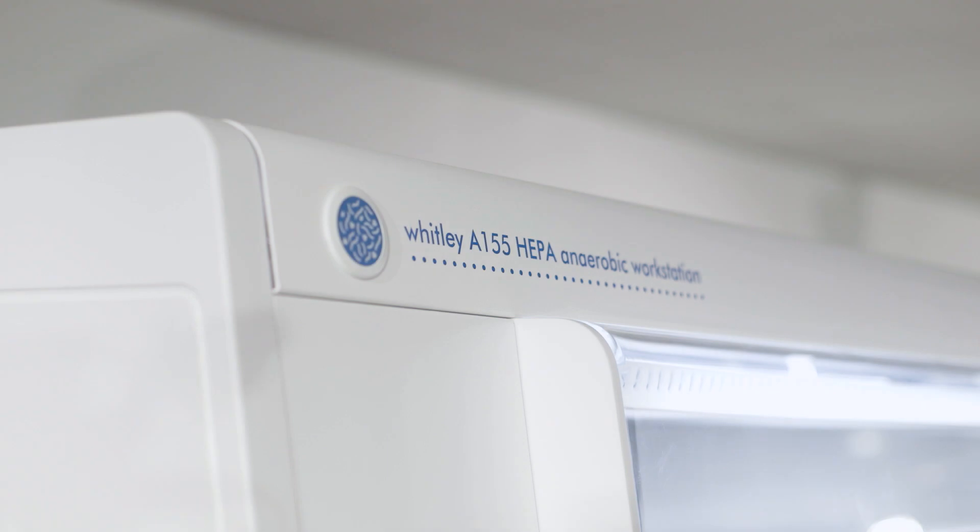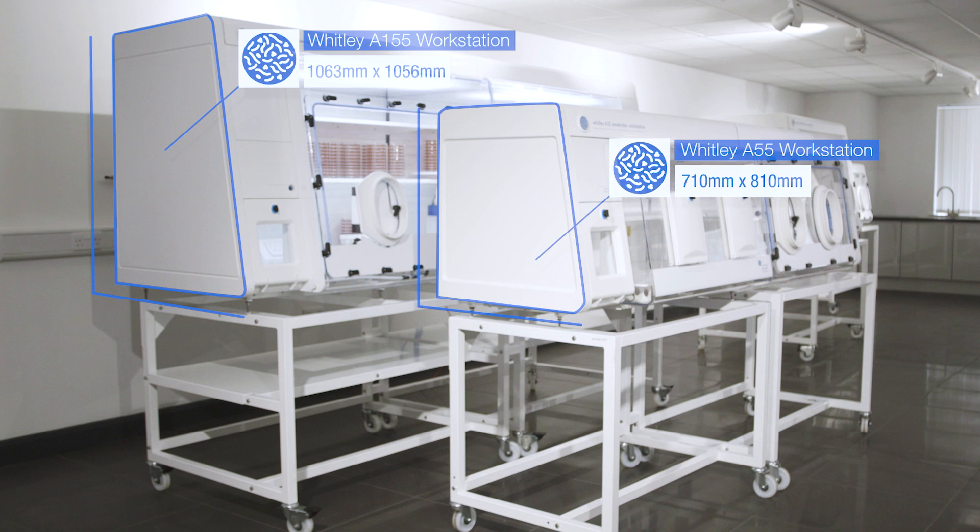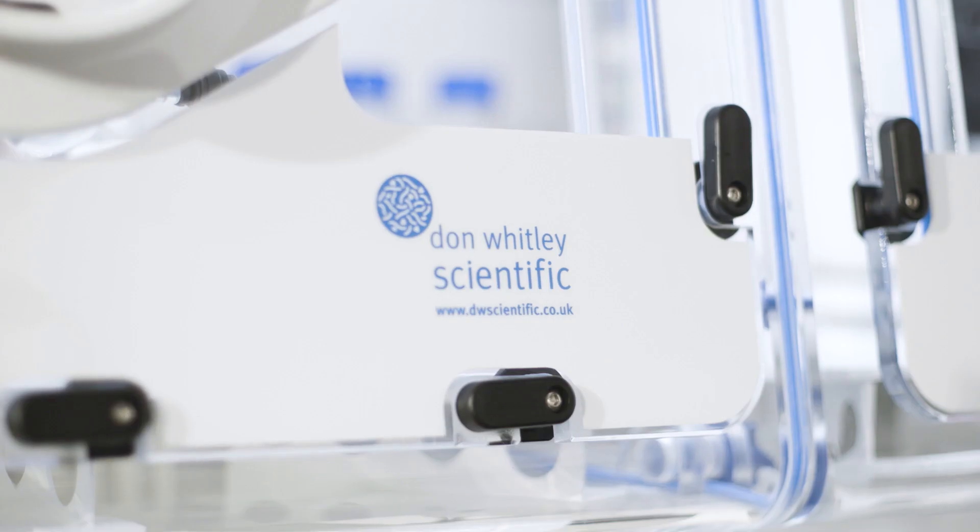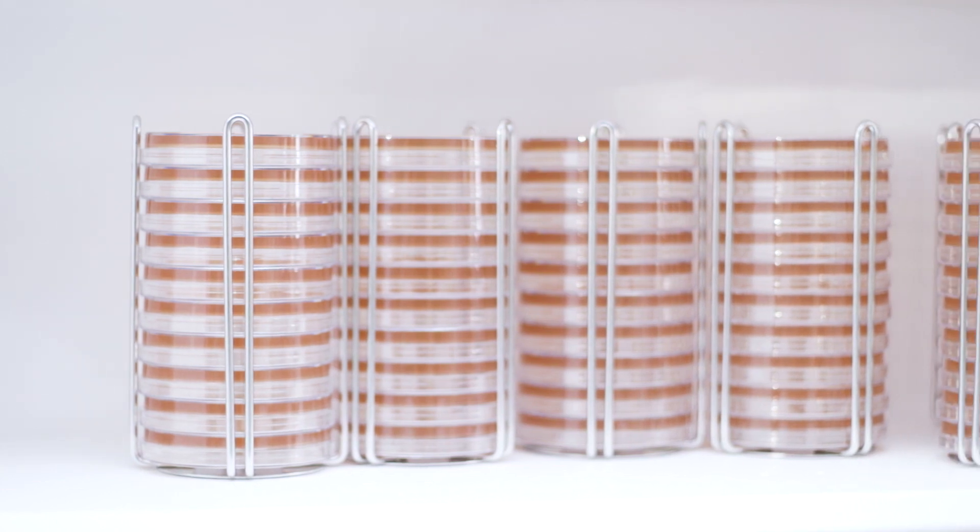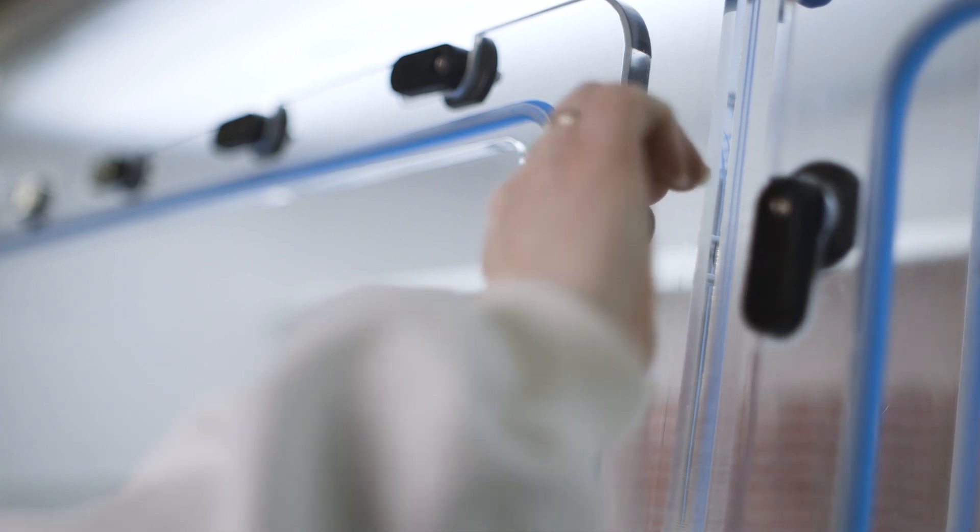The Whitley A155 HEPA workstation is 350mm taller than an A55 workstation. It has a capacity six times that of an A35, two deep airlocks that can be operated independently and two removable fronts.